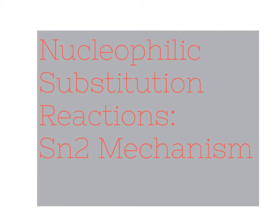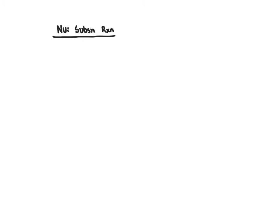Let's start with a quick review of what we're referring to when we say a nucleophilic substitution reaction. In general, a nucleophilic substitution reaction involves having a reaction mixture that consists of an electrophilic carbon atom. An electrophilic carbon atom is a carbon atom that is electron deficient — in other words, a positively polarized carbon atom. A positively polarized carbon atom comes about because it is a carbon bonded to a very electronegative atom.